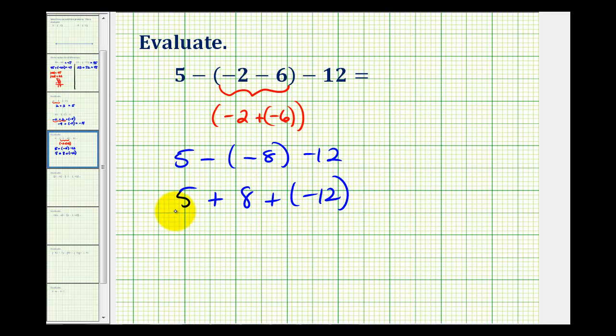Now working our way from left to right, five plus eight, that would be thirteen. So now we have thirteen plus negative twelve. And notice these have different signs, but the positive thirteen is going to outweigh the negative twelve. So our sum will be positive one.